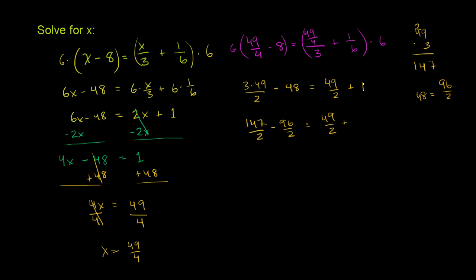Needs to be equal to 49 over 2 plus, and instead of having this a 1, let's write that as 2 over 2. And what's 147 minus 96? So 147 minus 100 would be 47, but we're going to subtract 4 more than that.